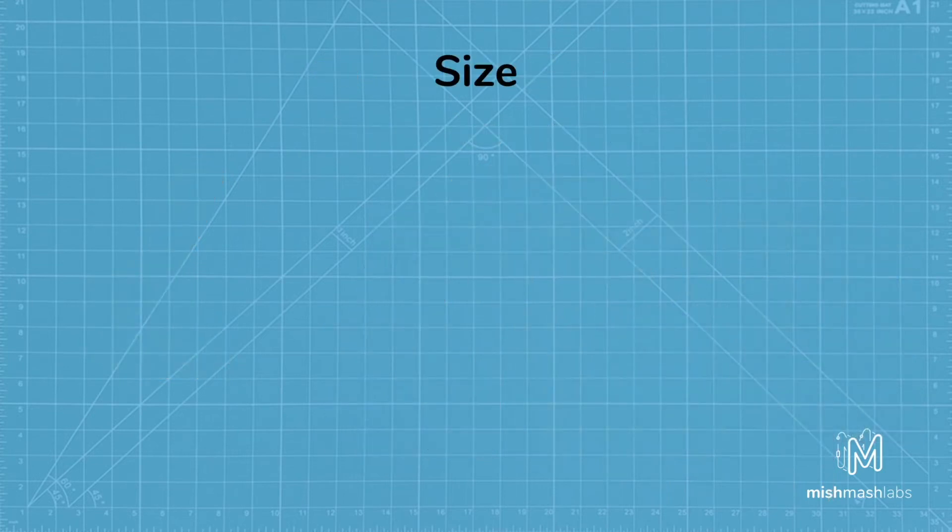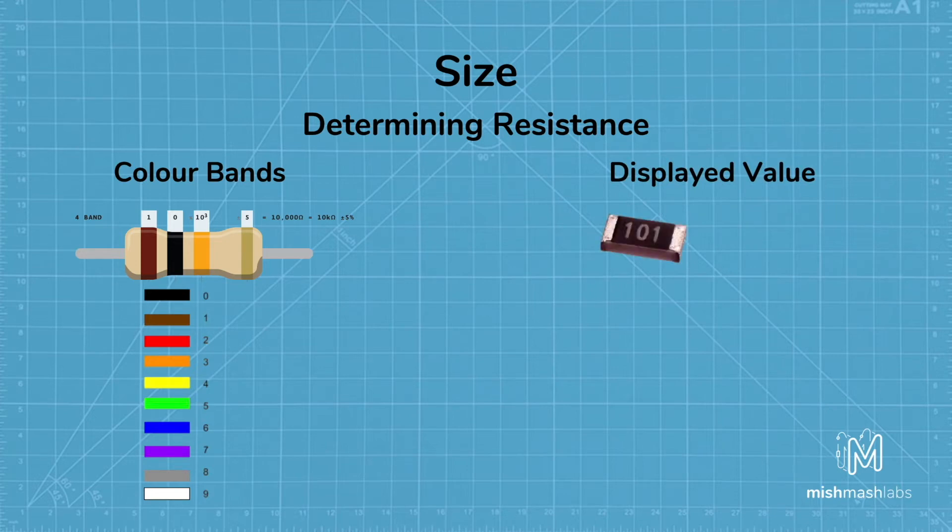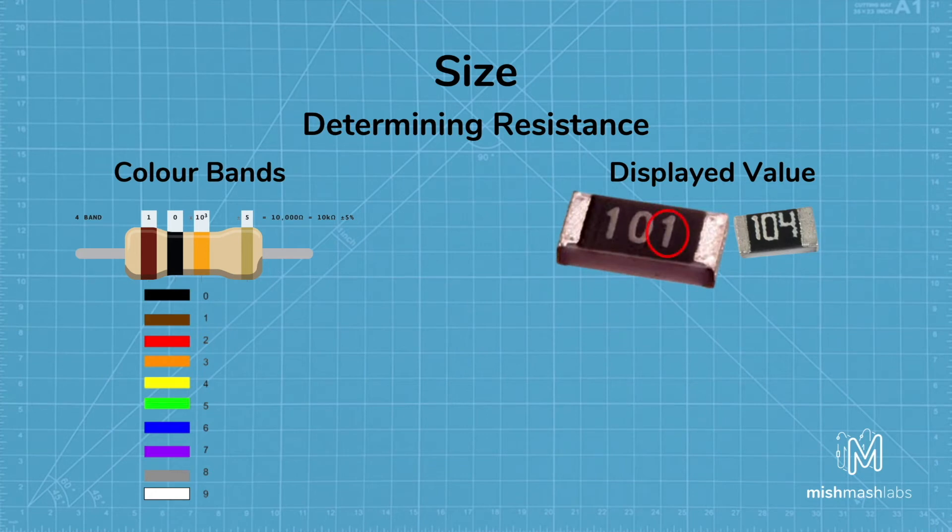Although it doesn't appear so, most resistors show the resistance marked on them. Through hole resistors use a color coding system. The first two bands indicate the most significant digits of the resistor's value. The third band is the weight value, which multiplies the two significant digits by a power of 10. Surface mount resistors usually have three to four characters, numbers or letters printed on top. The third number indicates how many zeros you need to append to the first two numbers.